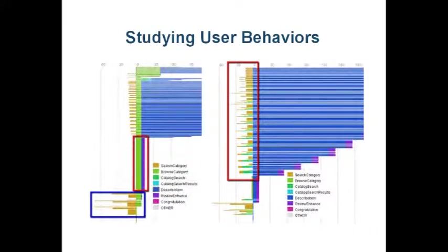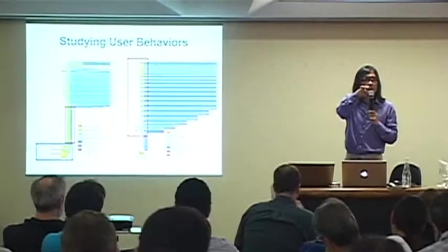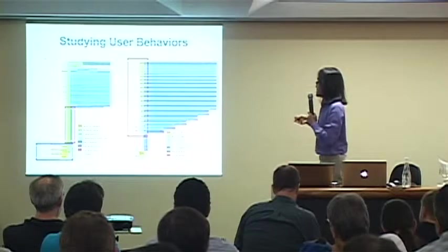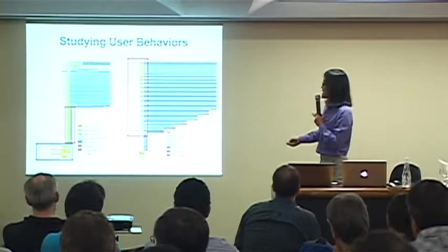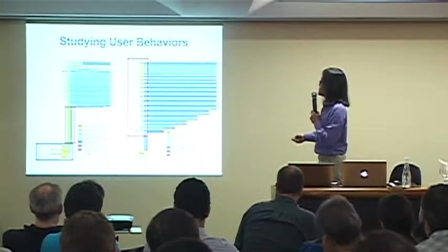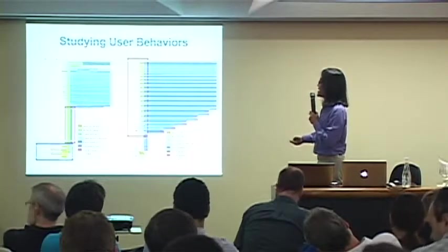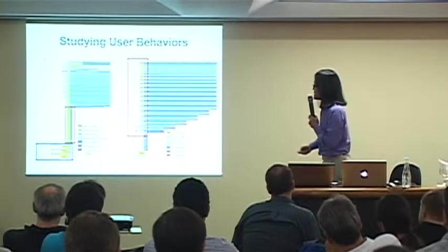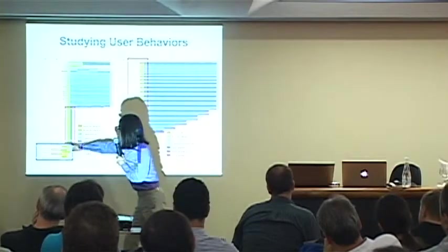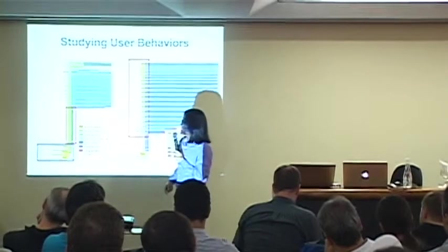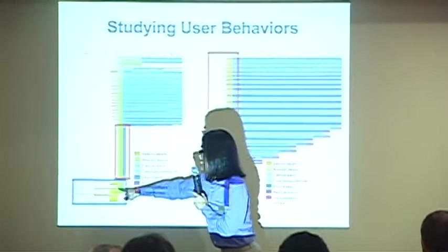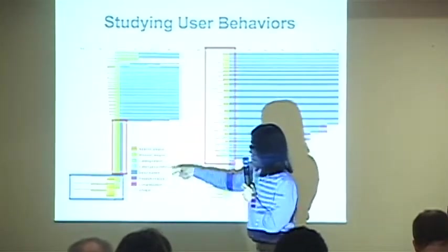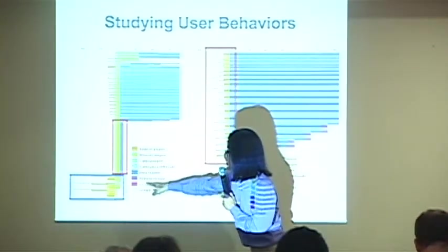And then for further study, like here they study like how much time users spend on a particular task. Like the user starts, like maybe they browse the category or they need to search the category and then they need to write the description. There's multiple steps they need to do. And so we basically allow the user to interactively align a particular step and then sort it based on amount of time taken. So this is the longest. And so here you can see that some of the users, they try very hard. They're probably not familiar with the website. So they spend a lot of time searching information and then they finally give up. So there's no, like they don't go to the step to write the description of their product, their stuff. And they didn't finish the process.